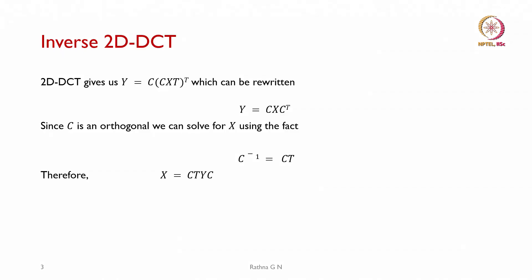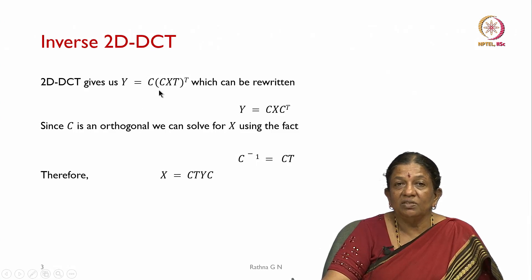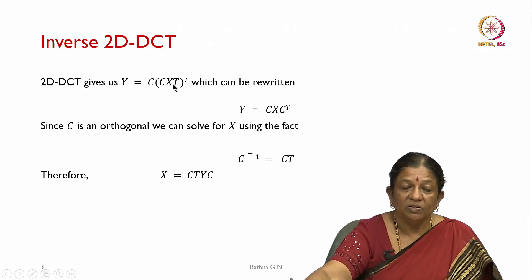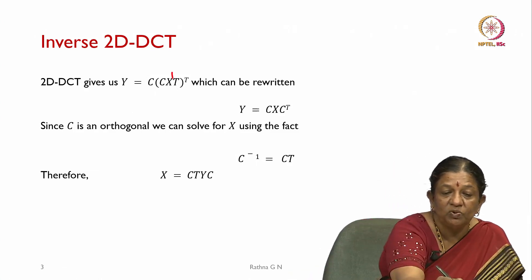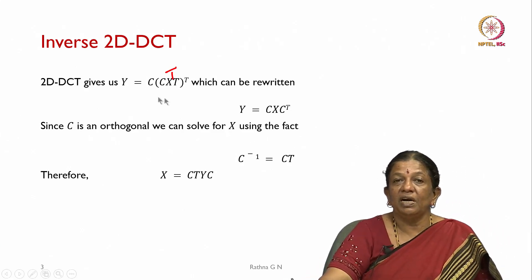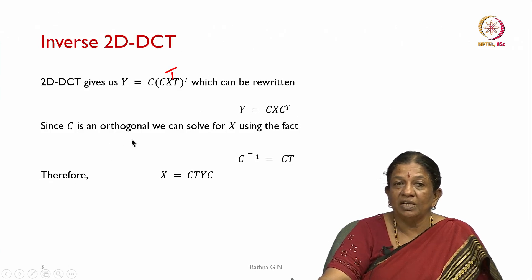Today we will see how we can implement the inverse of 2D DCT. For the forward DCT, we know that y is given as C into X transpose into A transpose. So y is equal to C into X into C transpose, which is what we can write.